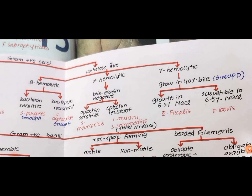When we grow streptococci on blood agar, we look at hemolysis. There are three types: complete hemolysis, which is beta hemolytic; incomplete hemolysis, which is alpha hemolytic; and non-hemolytic, which is gamma hemolytic.